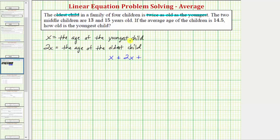this is the age of the youngest child and the oldest child, plus the ages of the two middle children, so plus 13 plus 15, divided by four, must equal 14.5.